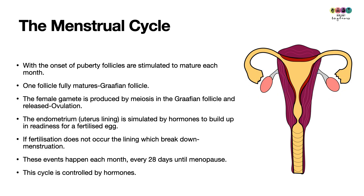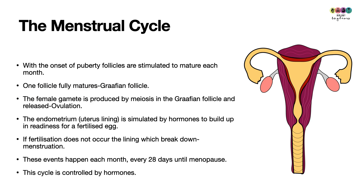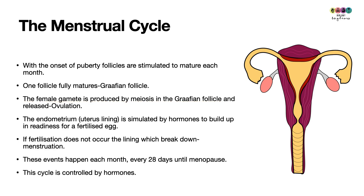These follicles are stimulated to mature, but only one will form the Graafian follicle. It is inside the Graafian follicle where the female gamete — the female egg — is produced by meiosis. Eventually, mid-cycle, the Graafian follicle will burst or rupture and release the egg. This is called ovulation.